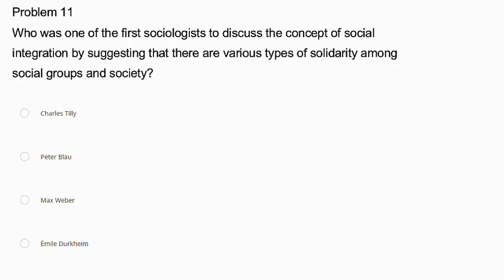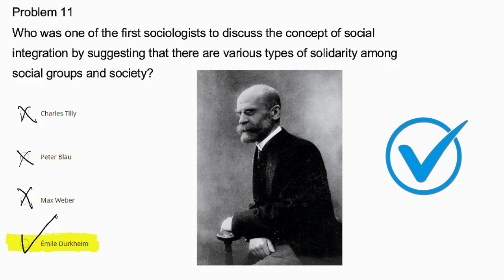Problem number 11. Who was one of the first sociologists to discuss the concept of social integration by suggesting there are various types of solidarity among social groups and society? Charles Tilly, Peter Blau, Max Weber, or Emile Durkheim? We can eliminate Charles Tilly as he focused on social movements. Peter Blau's expertise was social exchange theory. Max Weber focused on bureaucracy and social action. So the correct answer is Emile Durkheim, who was one of the first sociologists to discuss social integration and various types of solidarity.